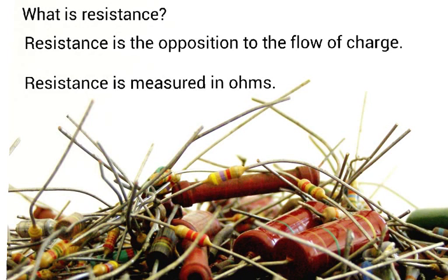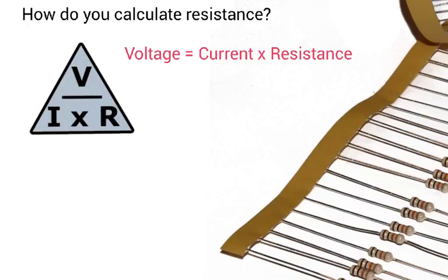What is resistance? Resistance is the opposition to the flow of charge. Resistance is measured in ohms, and the symbol for ohms is omega. Also, the circuit symbol for a resistor is a rectangular box with two wires coming out of it. So how do you calculate resistance?